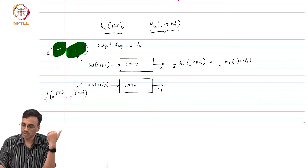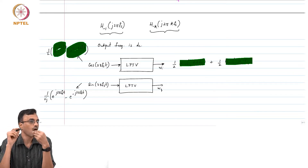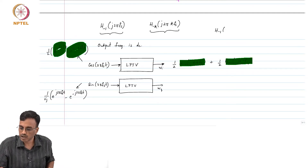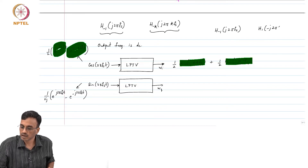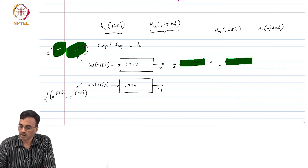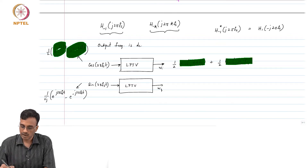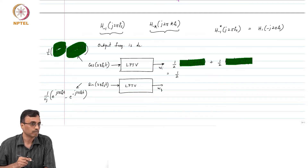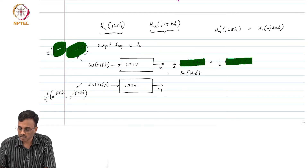What is special about H_{-1}(j2πfs) and H_{+1}(−j2πfs)? They are complex conjugates of each other: H_{+1}(−j2πfs) = H_{-1}(j2πfs)*. Therefore, when you add these two terms you get the real part of H_{-1}(j2πfs).